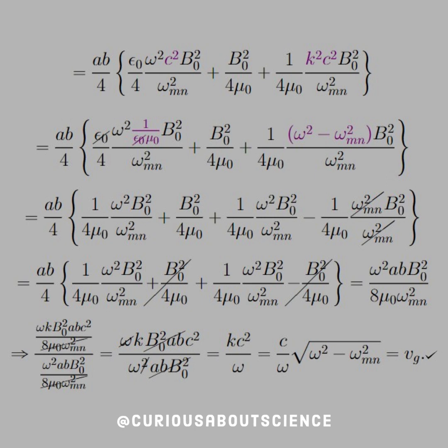And if we plug in what Kc is, then we're left with C over omega times square root of omega squared minus omega squared mn, which is exactly equal to VG. Holy cow. What a nice result. What a messy computation, but a very nice result.